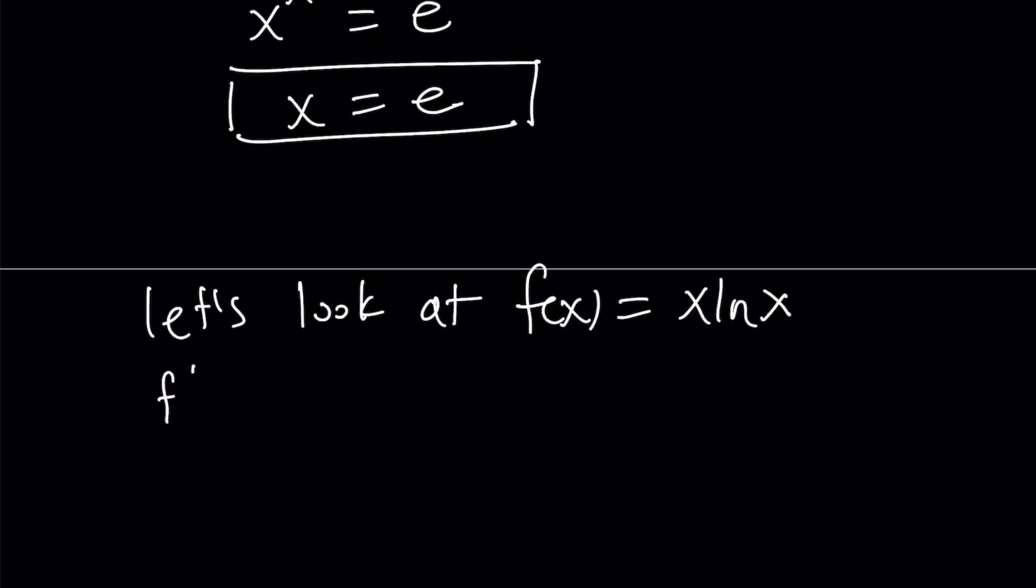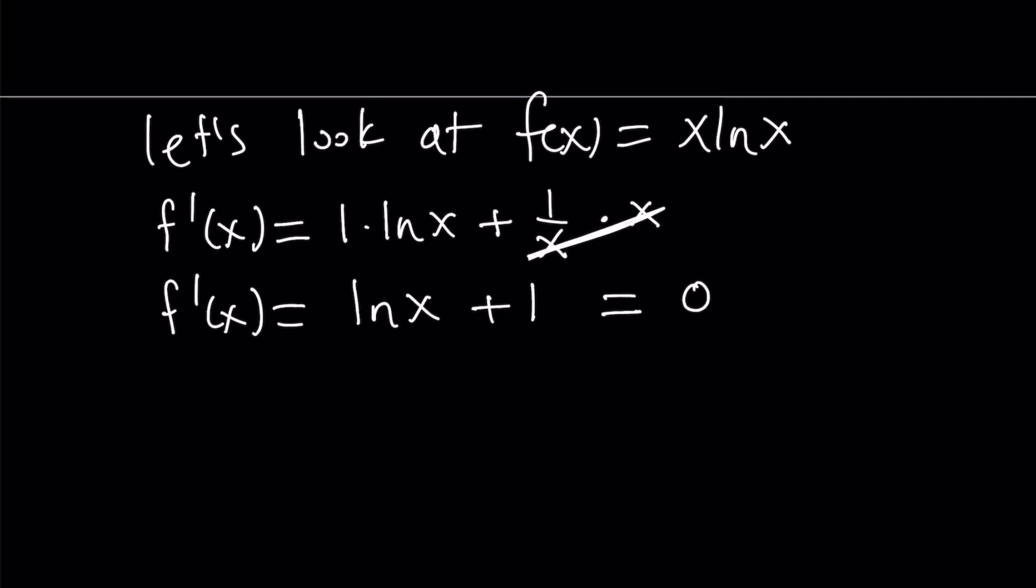So if I take the first derivative by using the product rule, the derivative of x times ln x, plus the derivative of ln x, 1 over x, times x. And the x's cancel out, and I end up with f prime equals ln x plus 1. And of course, with all the derivatives, I want to set it equal to 0 and find critical points.